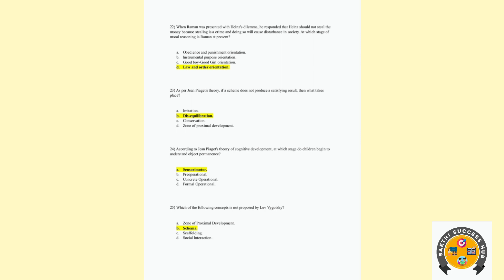Twenty-third question: As per Jean Piaget's study, if the schema does not produce satisfying results, then what takes place? It is a disequilibrium stage. Twenty-fourth question: According to Jean Piaget, at what stage do children begin to understand object permanence? That is the sensorimotor stage. Twenty-fifth question: Which of the following concept is not proposed by Vygotsky? The answer is schema — that is Jean Piaget's concept. So the answer is B.